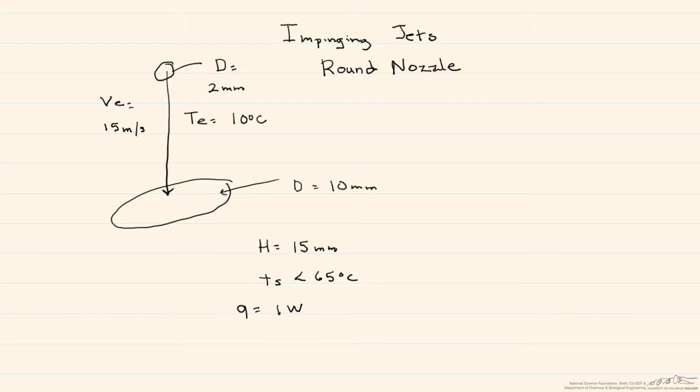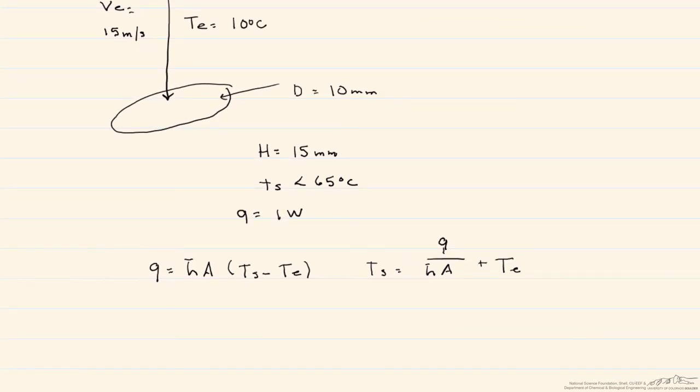We're going to use Newton's law of cooling, such that Q equals H times the cross-sectional area, in this case of the transistor, times the difference in temperature between the surface and the air exiting the nozzle. As always with convection problems, the biggest issue is how to find that H.